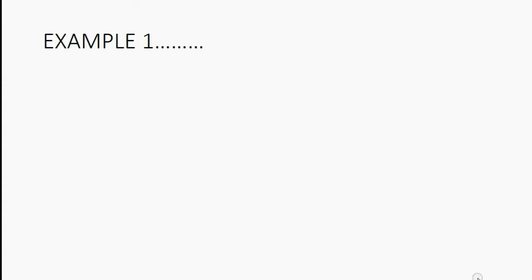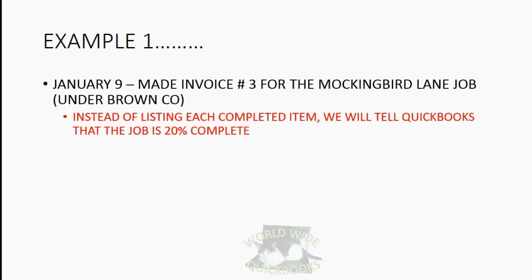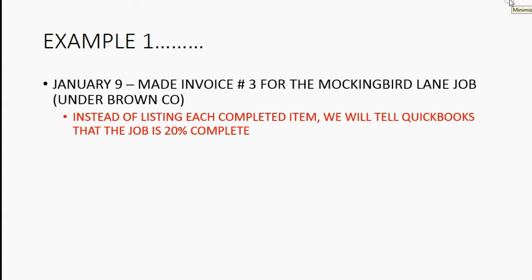Now let's look at our first example. Imagine on January 9th we made invoice number three for the Mockingbird Lane job under Brown Company. We're billing Brown for twenty percent of the job complete. So instead of listing each completed item like we did in the previous video, we will tell QuickBooks that the job is twenty percent complete. Let's open up the invoice window and take a look.